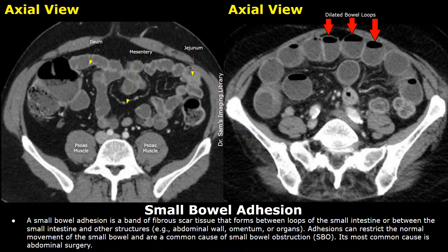Hello everyone, this is Dr. Sam, and this video is about small bowel obstruction on CT scan. First we will look at the most common cause of small bowel obstruction, that is small bowel adhesion. Adhesion is the formation of scar tissue between the loops of small intestine or between small intestine and other structures such as the abdominal wall, the omentum, or other organs. These adhesions can restrict the normal movement of the bowel and cause small bowel obstruction.